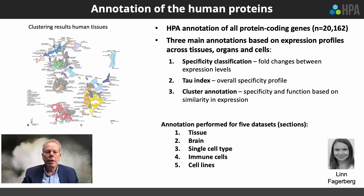One of the features of this new version 23 is a new annotation of all the human proteins. We are doing three main annotations based on expression profiles across tissues, organs and cells. First, a specificity classification which captures the full change between different organs and tissues of proteins — a tau index which gives an overall specificity profile for every protein-coded gene.